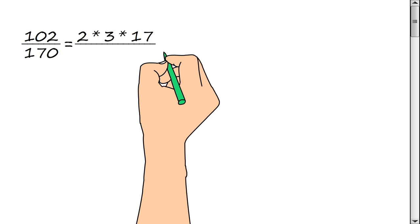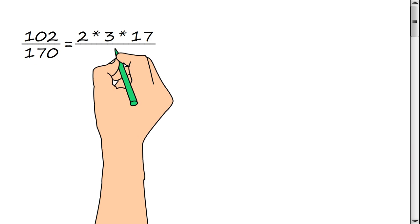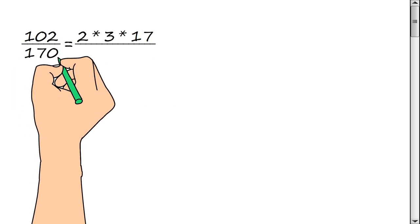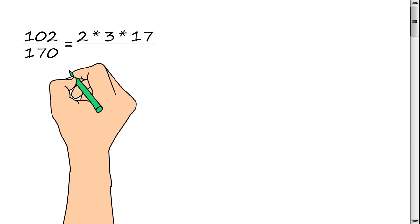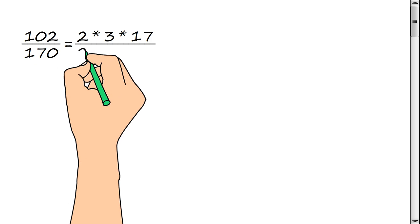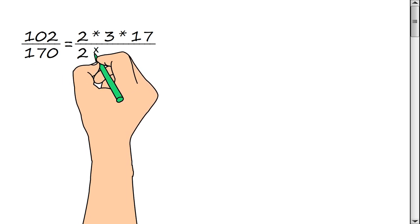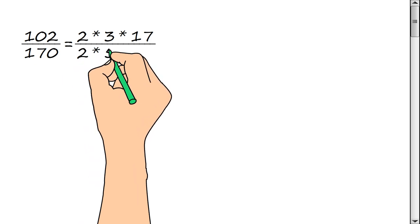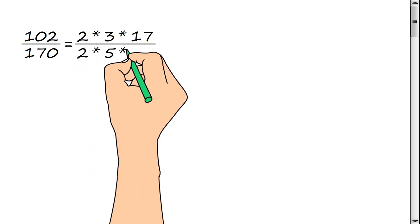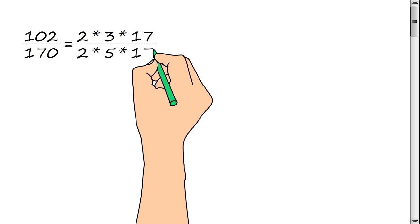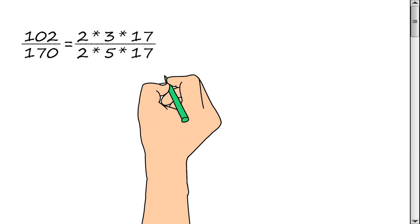Now we represent the denominator of a fraction as a product of prime factors: 2, multiply by 5, multiply by 17.